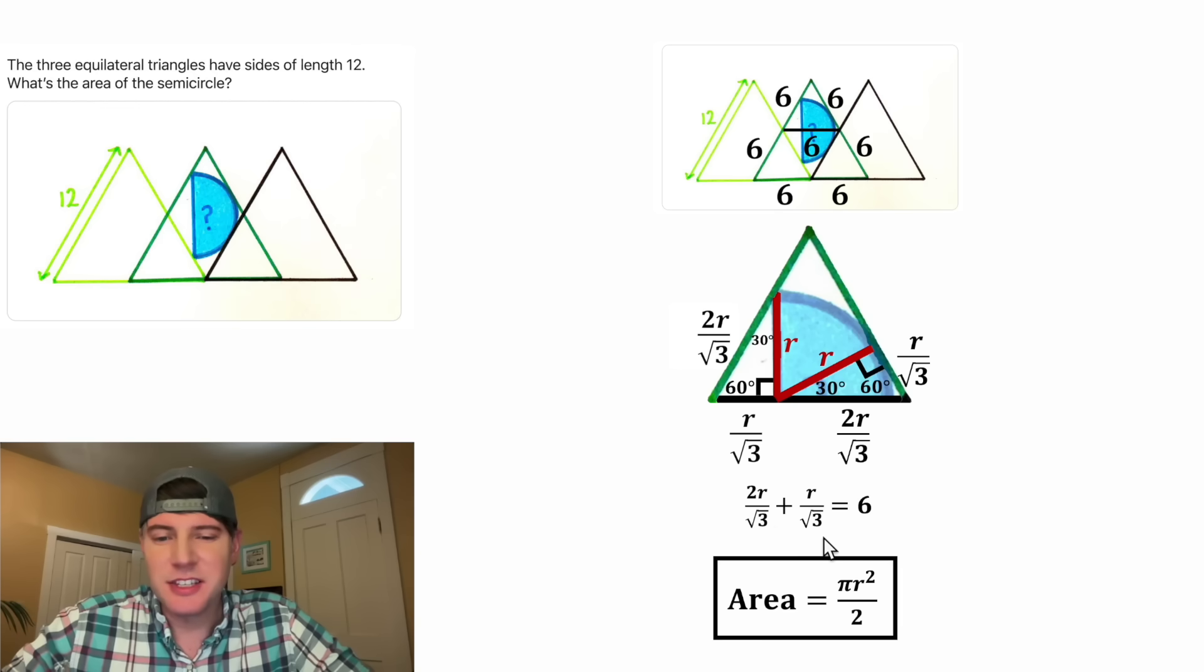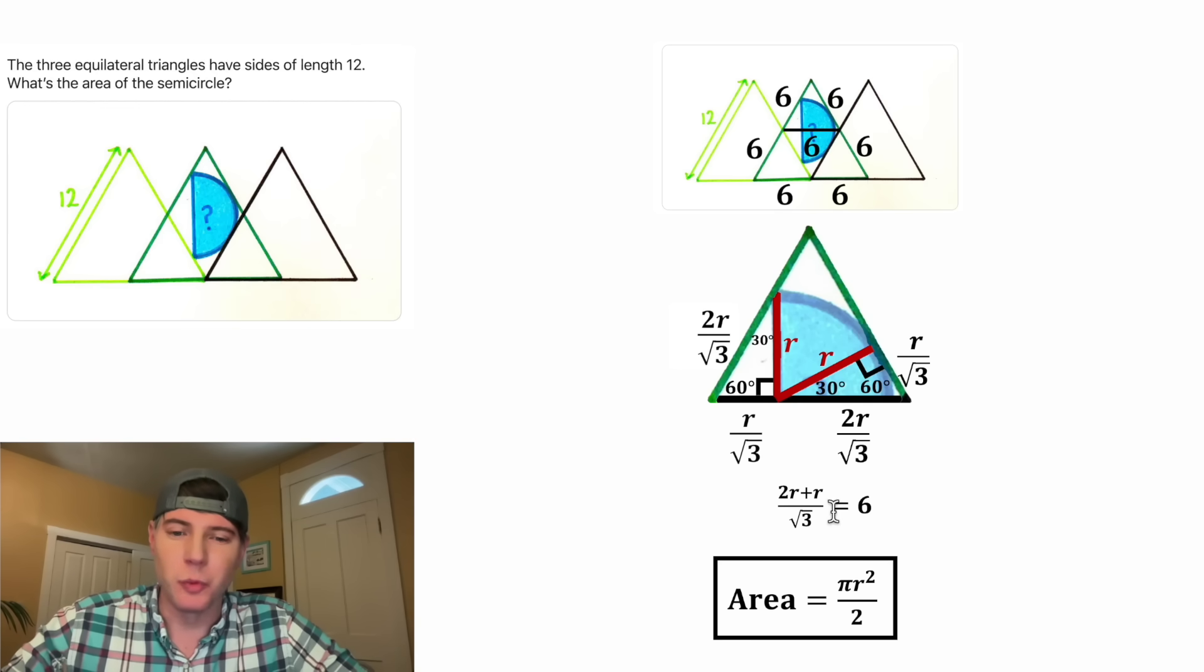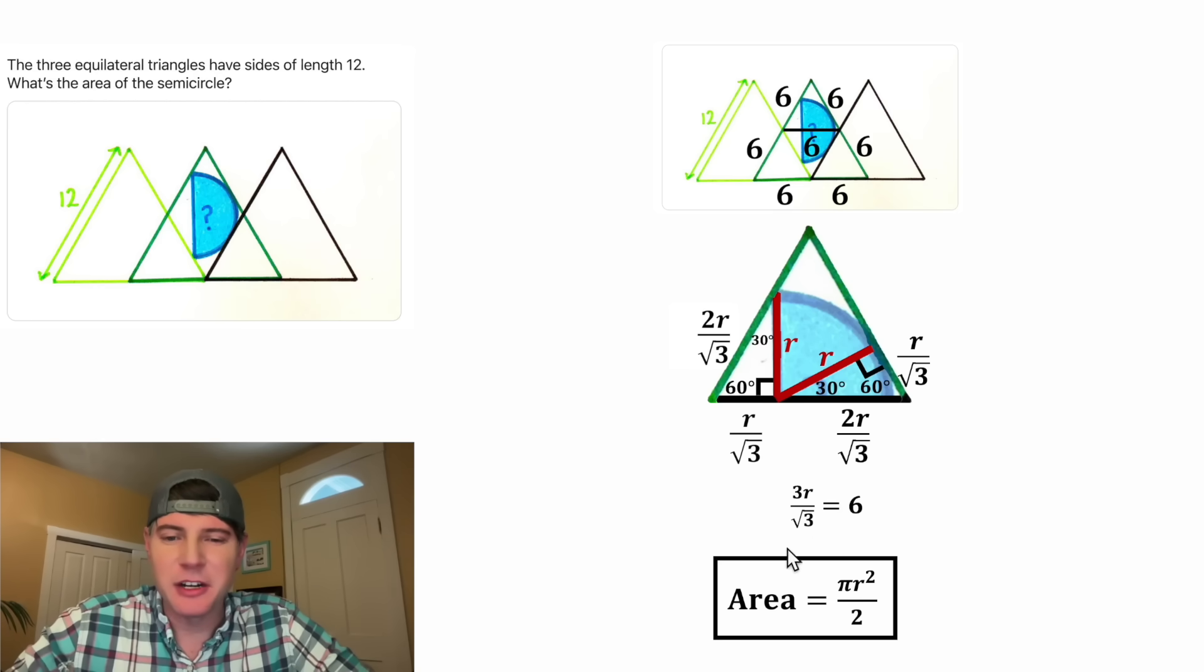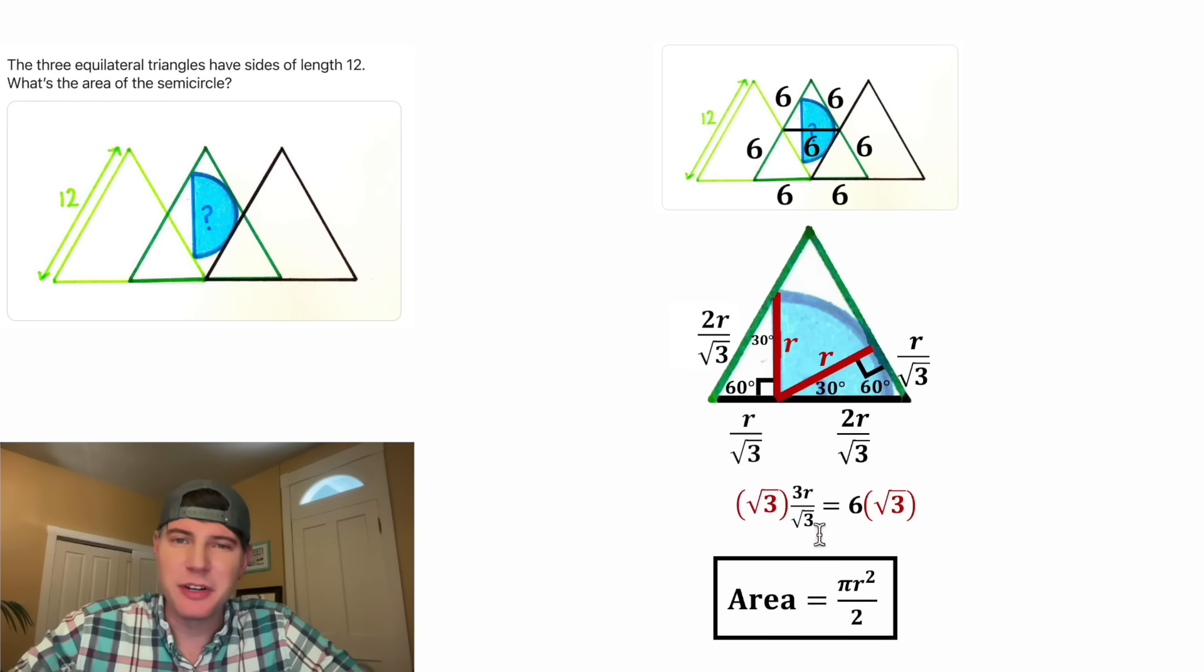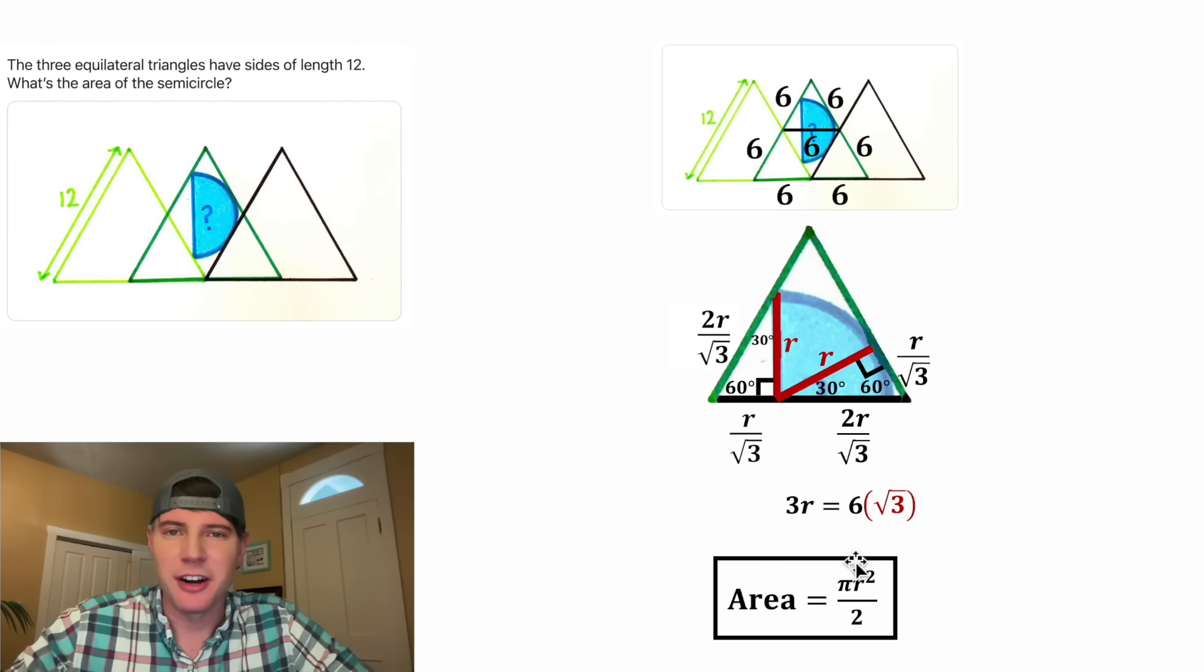And we can clean this up. Since these have a common denominator, we can write them as a single fraction. And 2r plus 1r is equal to 3r. And now to get rid of the √3 in the denominator, we can multiply both sides of the equation by √3. This √3 and this √3 will cancel each other out, so we're going to be left with 3r. And then on the right hand side, we can call this 6√3.